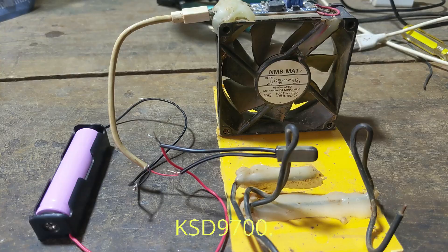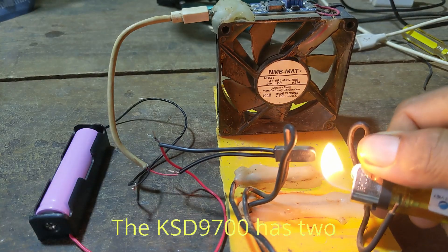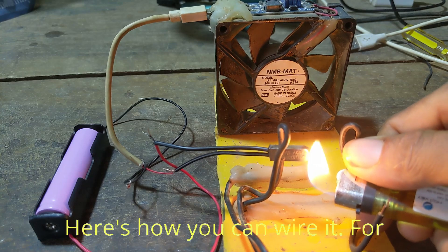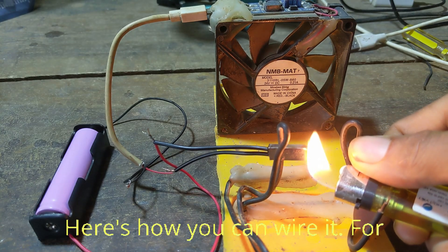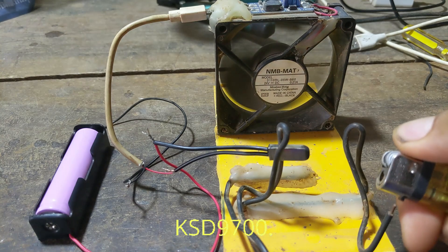Wiring the KSD 9700. The KSD 9700 has two terminals for electrical connections. Here's how you can wire it. For normally closed (NC) KSD 9700: